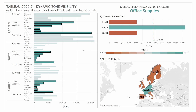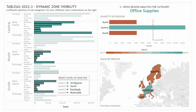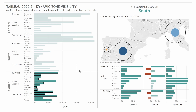Then we might want to focus in on the south region. We go to the south and pick that region from the tooltip. That selects all of the products in the south region. Now we have this fourth kind of analysis, which is a focus on one particular region, and we see all the products — sales, profit, and quantity.